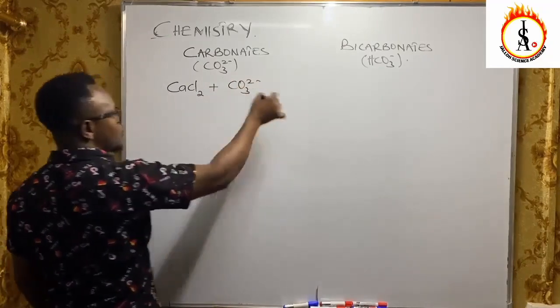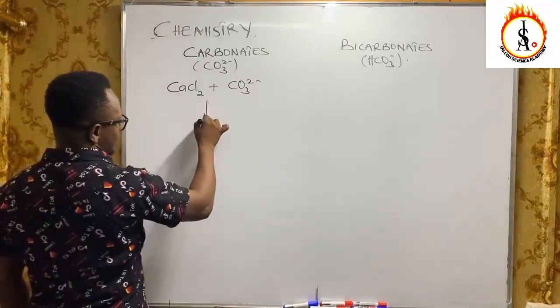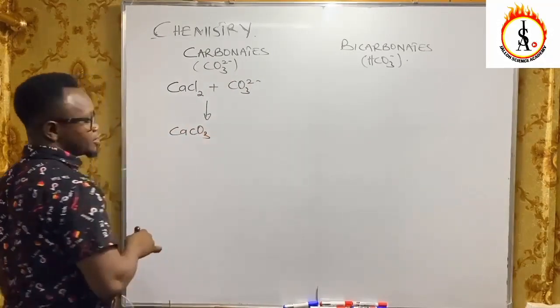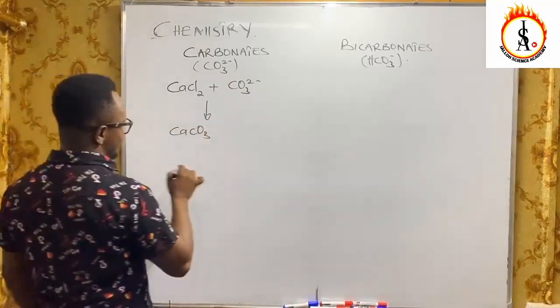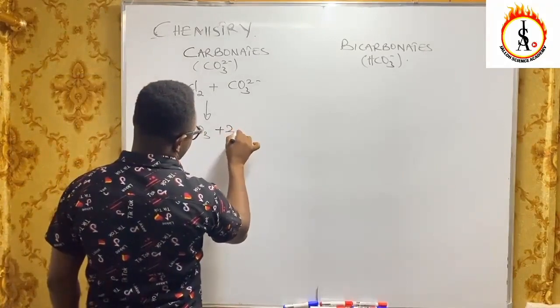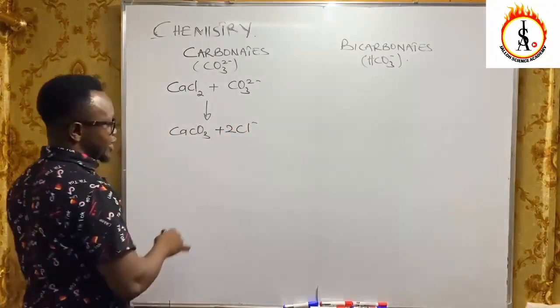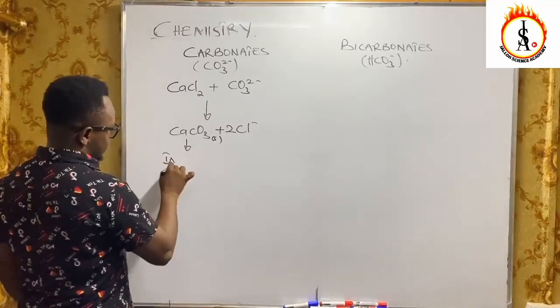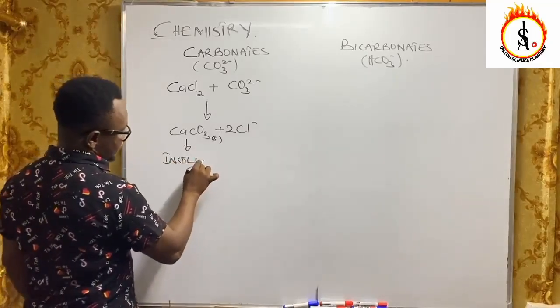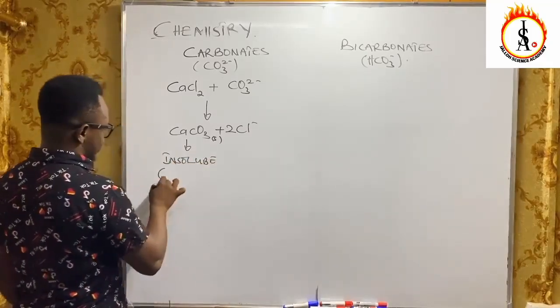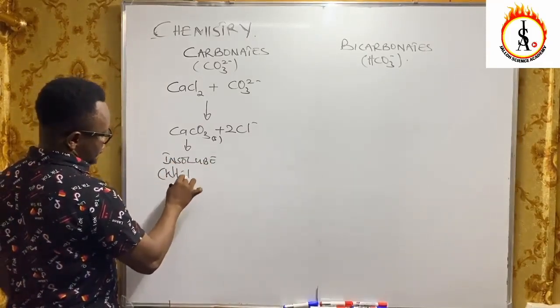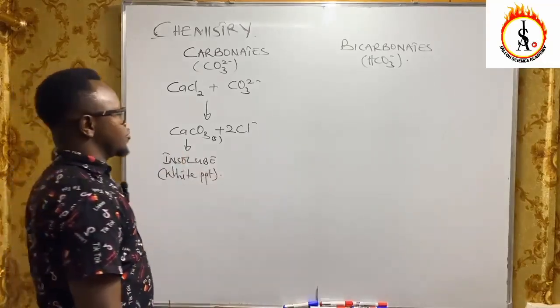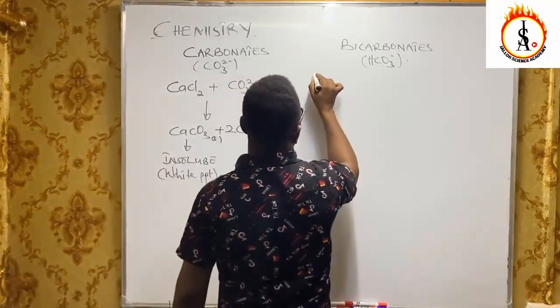These are the equations. When these two react you are going to get calcium carbonates that will be formed and then you get two chloride ions. This is already a solid, this is insoluble, which is a white precipitate that is formed.